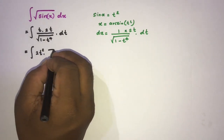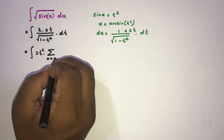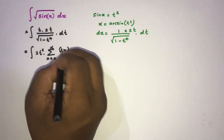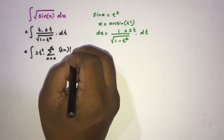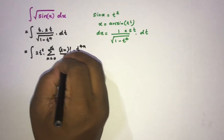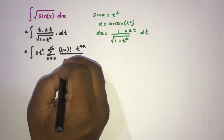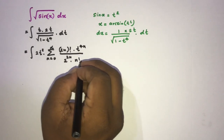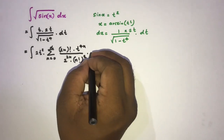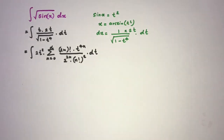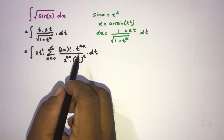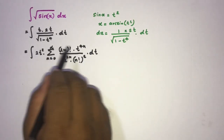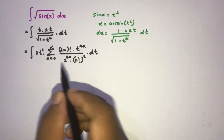We can write this as the infinite sum from n equals 0 to infinity of (2n)! times t to the power 4n, over 2 to the 2n times (n!)² dt. This series is generated using the binomial expansion.